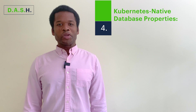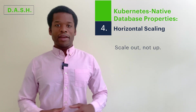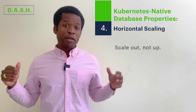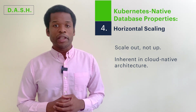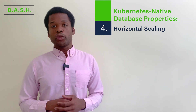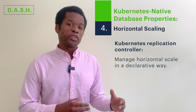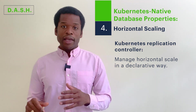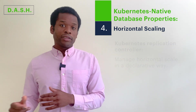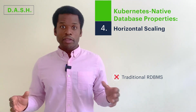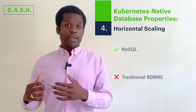Moving on to the fourth and final property of Kubernetes-native databases: horizontal scaling, which is the idea of increasing throughput by adding more nodes rather than vertically scaling by buying a bigger and more expensive machine. This is critical because it's inherent to cloud-native architectures, and Kubernetes makes this process easy. In Kubernetes, using the replication controller, one can manage horizontal scale in a declarative way — you simply state how many pods you want, Kubernetes watches, and reacts by adding or removing pods until it meets your desired state. With traditional relational databases, horizontal scaling is hard; one can attempt sharding, but this will dramatically increase operational overhead. NoSQL databases, on the other hand, horizontally scale quite easily.